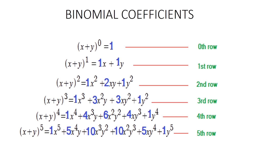And the rest of the expansions follow this pattern. Therefore, the binomial coefficients in the expansion of (x + y)^n are obtained as the entries of the nth row of Pascal's Triangle.